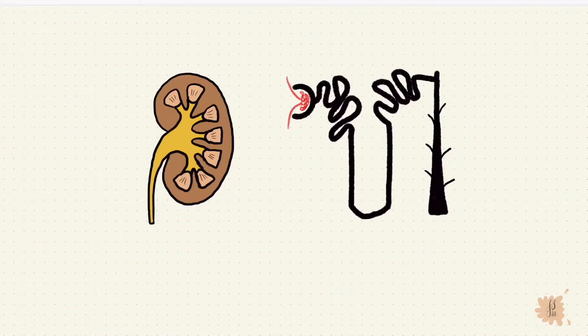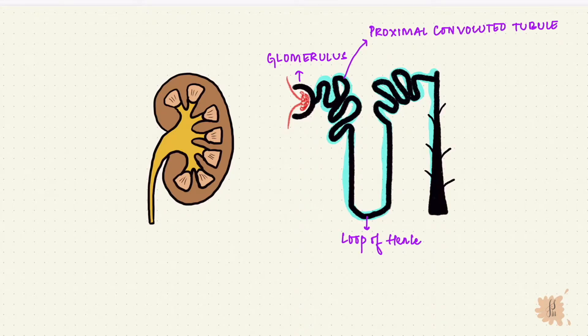The kidney has millions of nephrons and each nephron has a glomerulus and a renal tubule. The first part of the renal tubule is the proximal convoluted tubule, which then leads into the loop of Henle, the distal convoluted tubule, and finally the collecting duct.